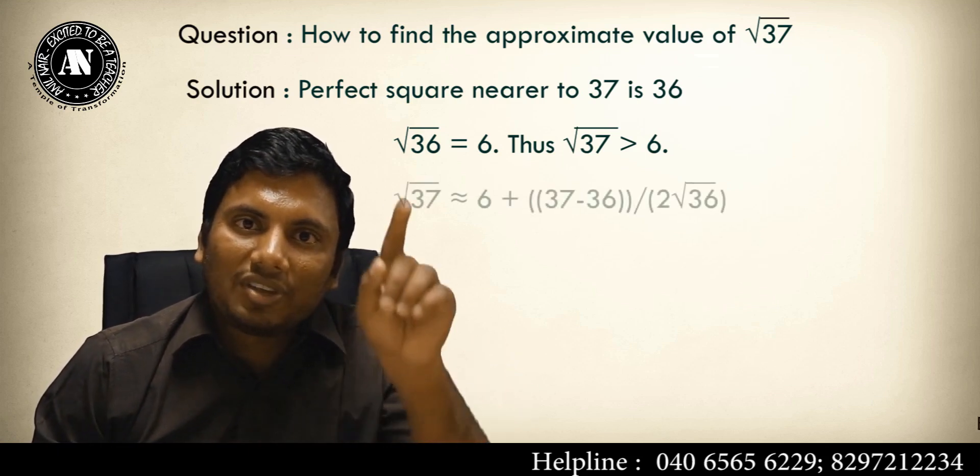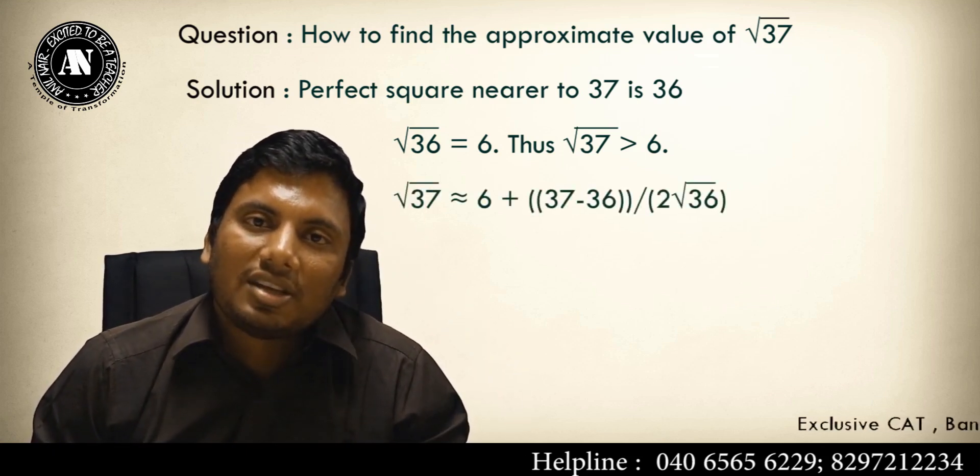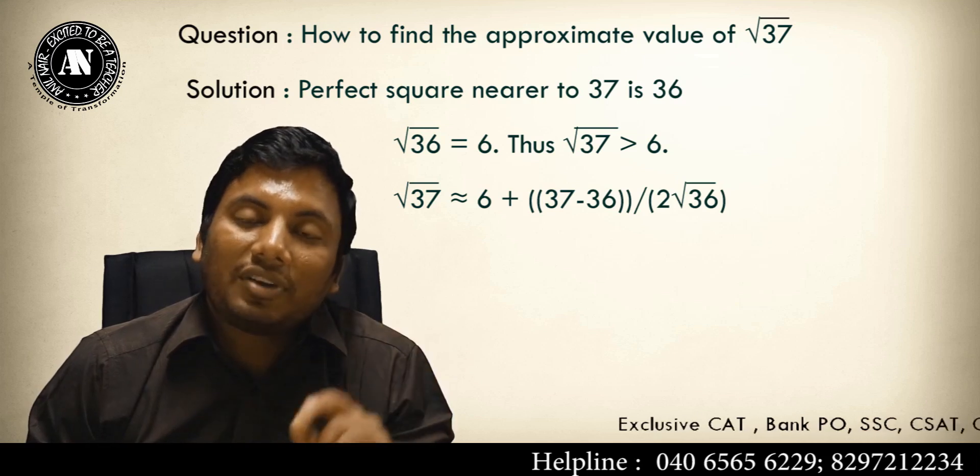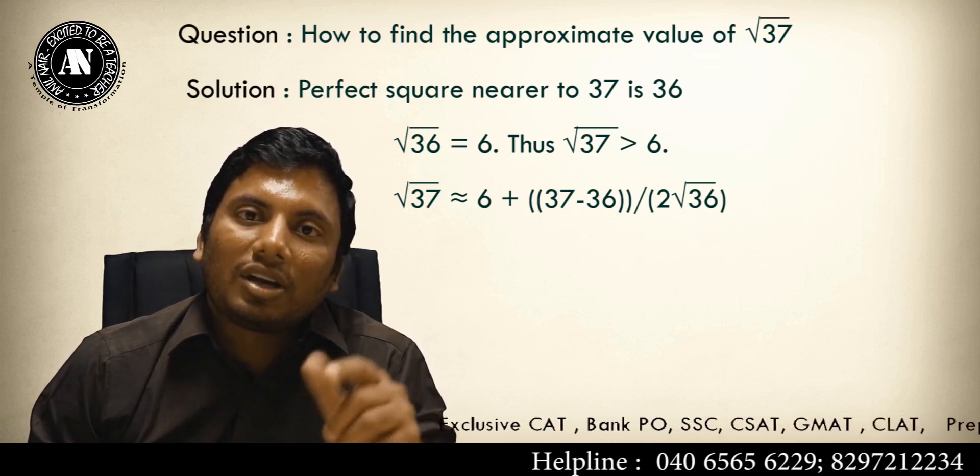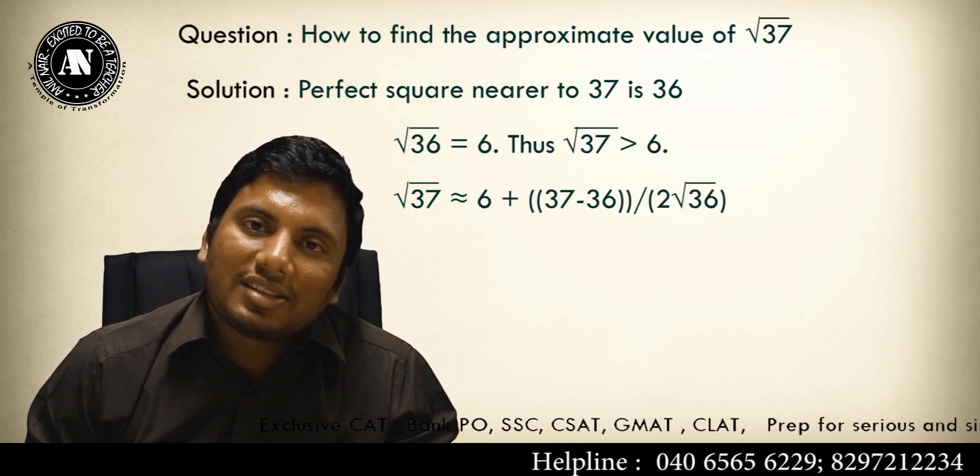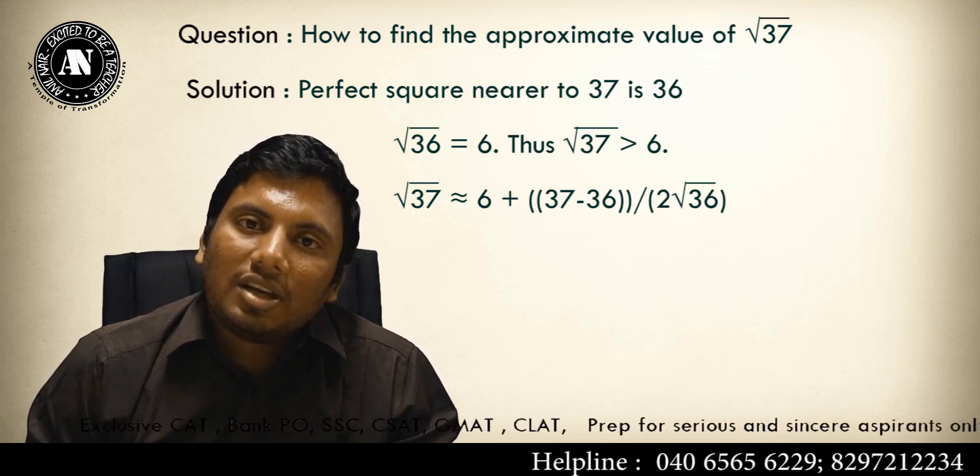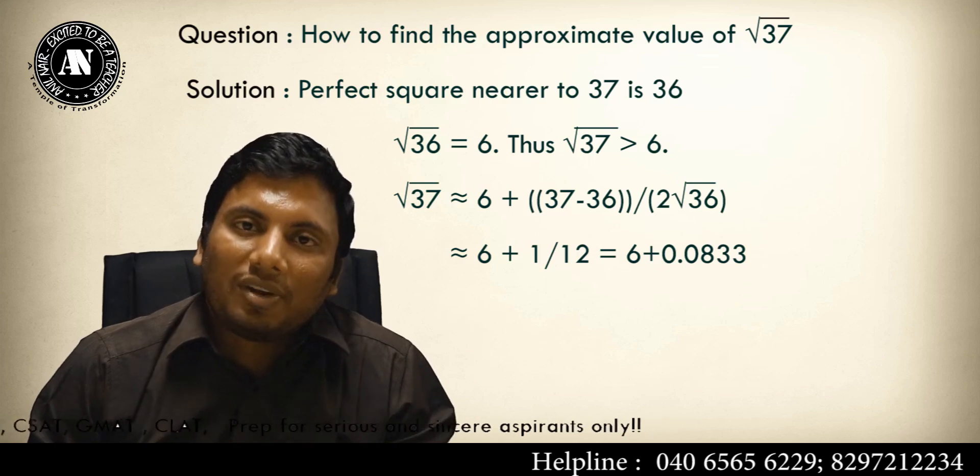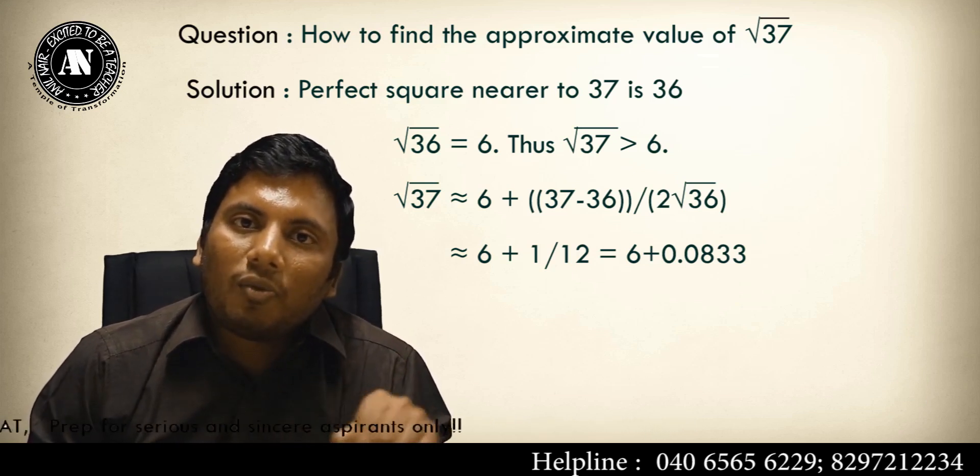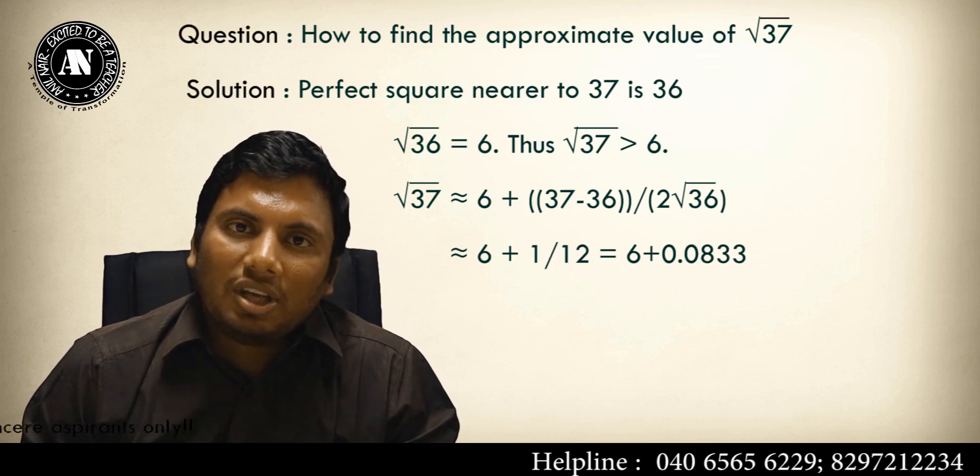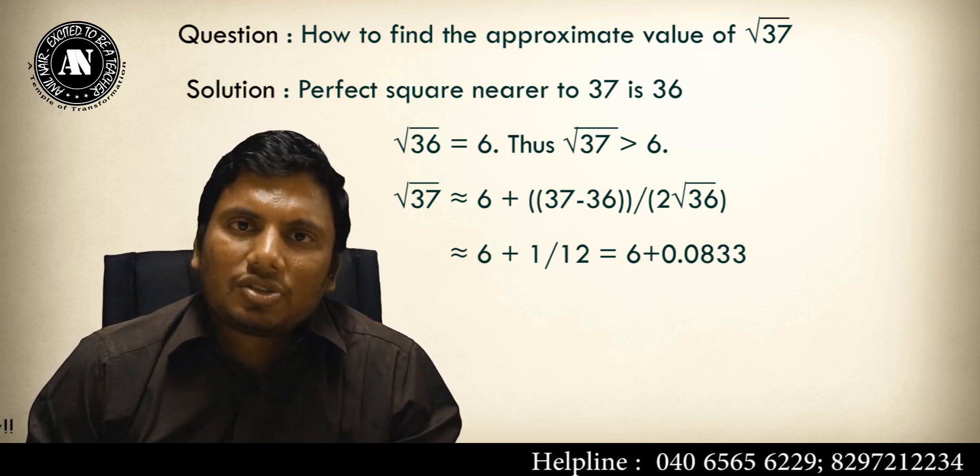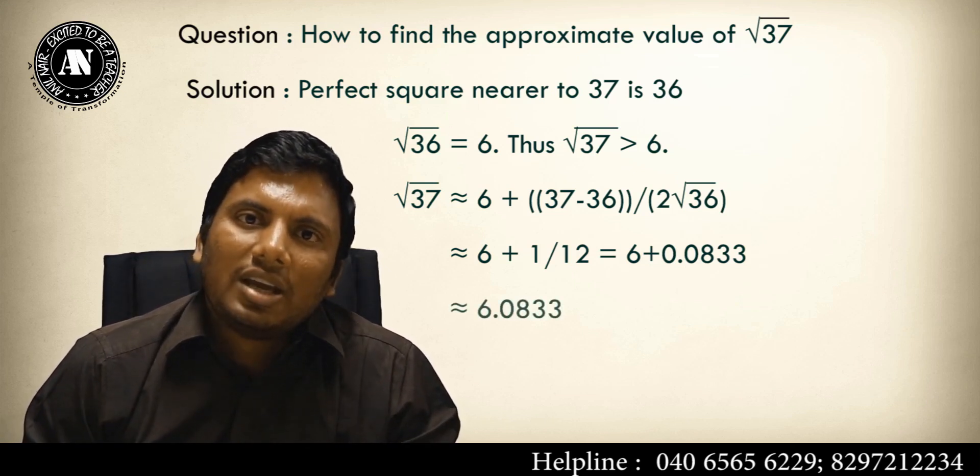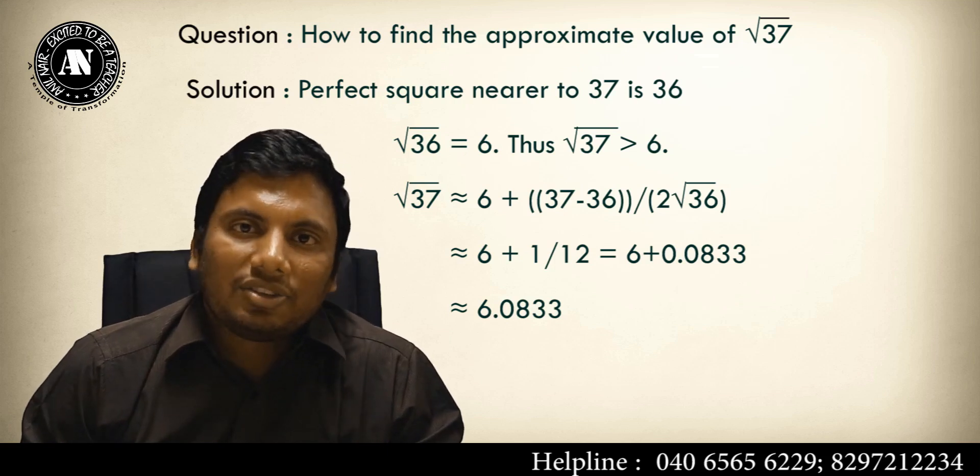6 plus 37 minus 36, what is the difference? 1. Then after getting the difference, double the value. What is square root of 36? 6. Double the value, what is double of 6? 12. So answer will become 6 plus 1 by 12. 1 by 12 is 0.0833, so answer will become approximately 6.0833.